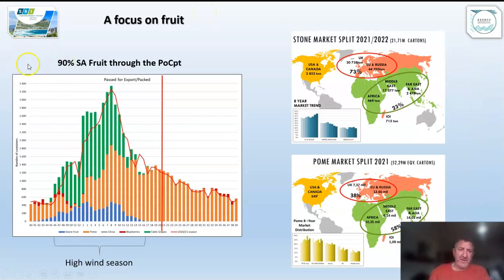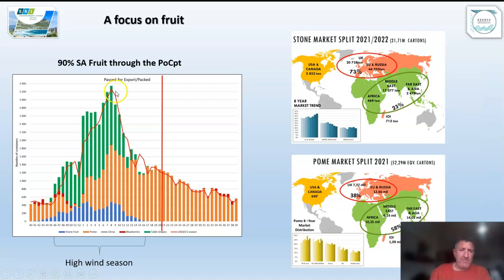What you're looking at here is a graph of the export of containers with fruit through the Cape Town port. The red line is an average. The peak week for export of fruit from Cape Town is in week eight, which is the end of February. The season for export starts to pick up around late September/October, peaks in February, and then tails off for the year. This coincides with our peak wind season.